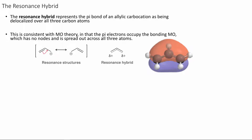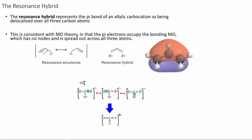Going back to the allyl cation: the resonance hybrid represents the pi bond of an allyl carbocation as delocalized over three carbons. We can visualize this using an electron density map showing that the electron density of the pi bond resides over all three atoms — in the p orbitals of all three carbons. This molecule has three resonance contributors with the carbon-oxygen double bond in each position, and all three carbon-oxygen bonds are equivalent.